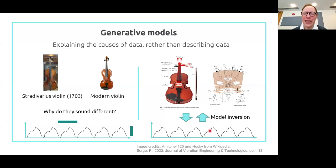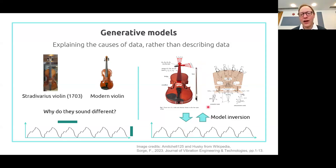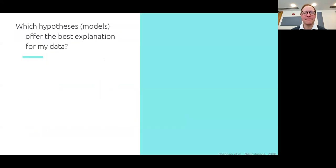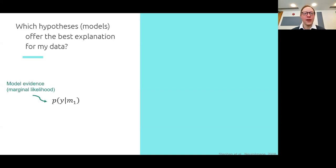That process of going from the data to the underlying mechanisms is called model inversion. The DCM recipe I'm going to walk you through today includes both specifying models that can predict data, and then running them in reverse — so-called model inversion — to ask about the underlying causes of those data. Statistically, the question of which model best explains my data has a really specific formulation, using a quantity called the model evidence. This is really the key statistic for our modelling endeavours.